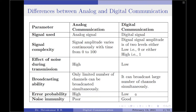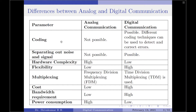The next parameter is noise immunity. Since analog communication has higher error probability, it has poor noise immunity. On the other hand, since digital communication has low error probability, it has good noise immunity.